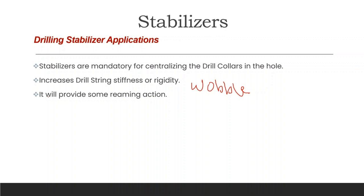Also, the stabilizer will provide some reaming action because of its length and diameter. It will wipe the wall of the hole to ensure a full gauge hole.